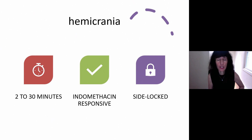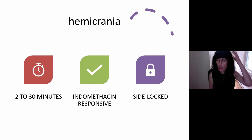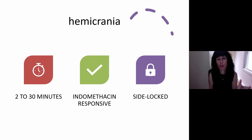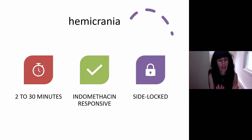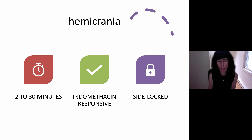Hemicrania — this is really important to recognize because these headaches are very specifically indomethacin responsive. They are side-locked, always on the same side, often further back on the head, can be behind the eye, lasting between two and 30 minutes, and can be very severe. If you see someone with a side-locked headache even without other symptoms, put them on a two-week trial of indomethacin — 50 milligrams every eight hours with food. Have them stop other NSAIDs. If it is hemicrania, it will dramatically resolve. It is a specifically indomethacin-responsive headache.